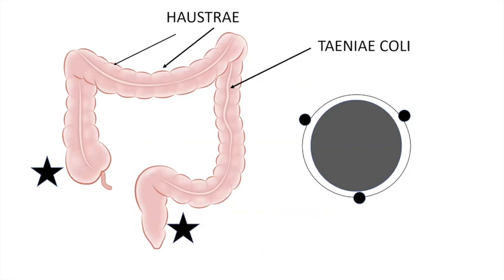A couple of unique features of the colon. The first is the haustra — just pockets or out-pouchings of the colon, characterized by mucosal folds on the inside. The second feature is the taenia coli. The two muscle layers in the muscularis propria are the inner circular and the outer longitudinal muscle layer — similar to the small intestine. The outer longitudinal muscle layer coalesces to form three longitudinal bands, spaced about 120 degrees apart, running the length of the colon from the cecum to the proximal rectum. The haustra are saccules whose contractions help propagate chyme through the colon.